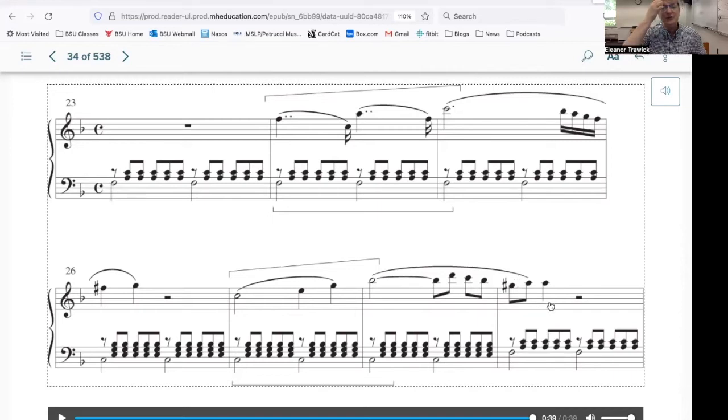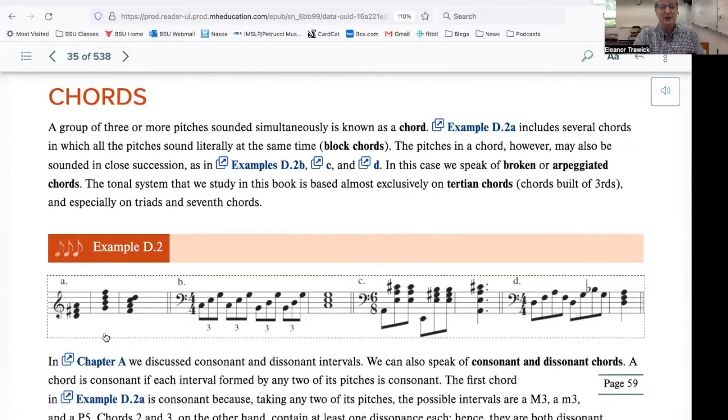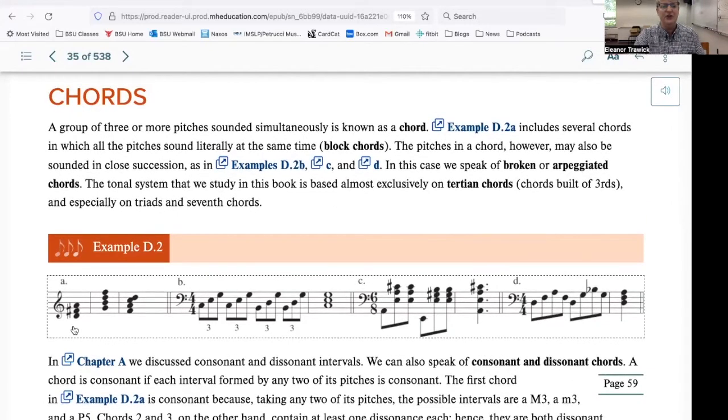So this is a different type of musical texture, where the horizontal lines and the chords have a different relationship to each other, but it still makes a satisfying piece of music. Finally, let's look at Example D.2. Example D.2 explicitly shows us different ways of presenting a chord. A chord is a group of three or more notes that sound together, or that sound in a melodic pattern, where you can understand that they belong together and create the harmony.